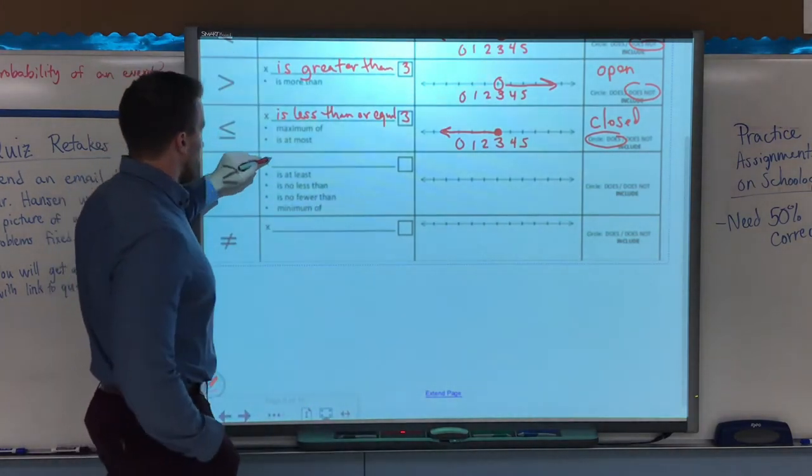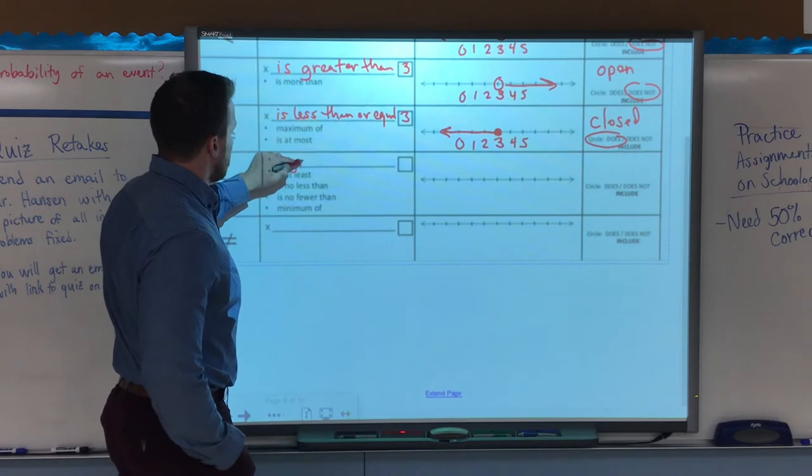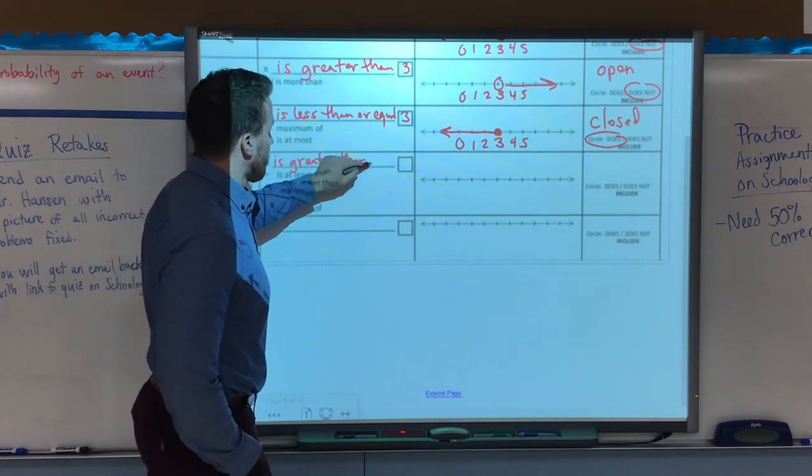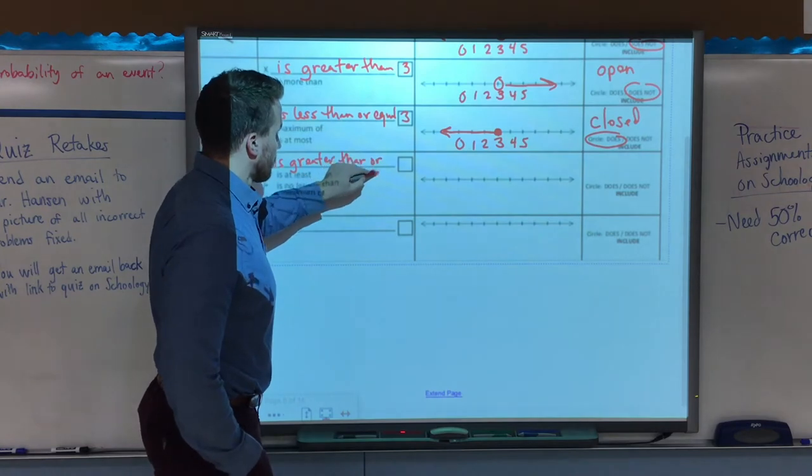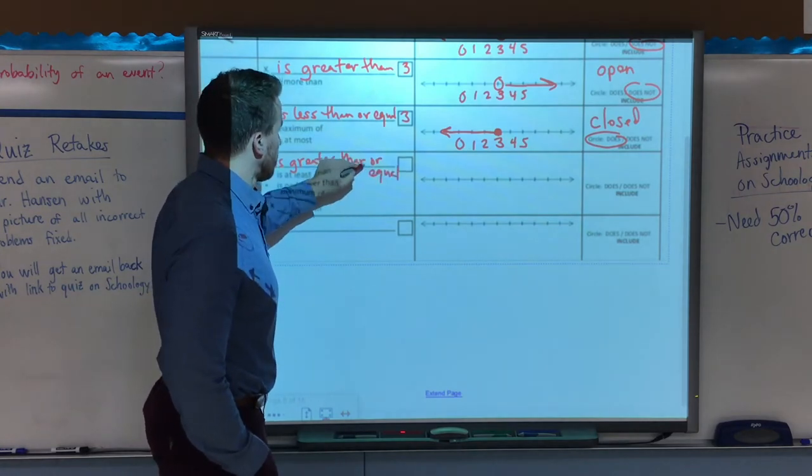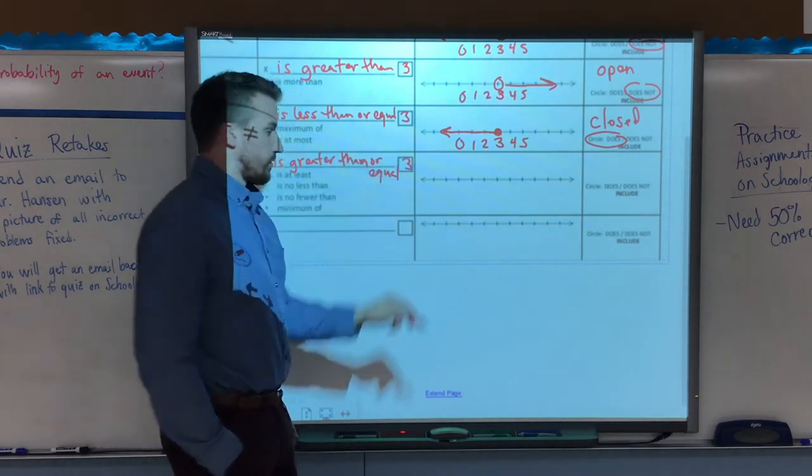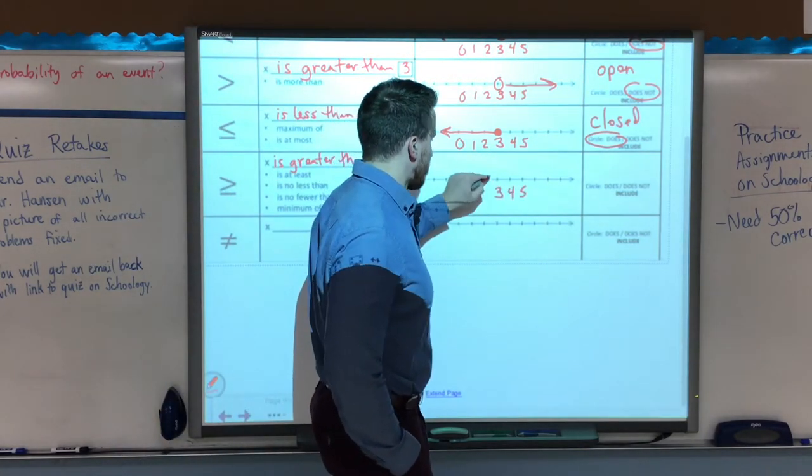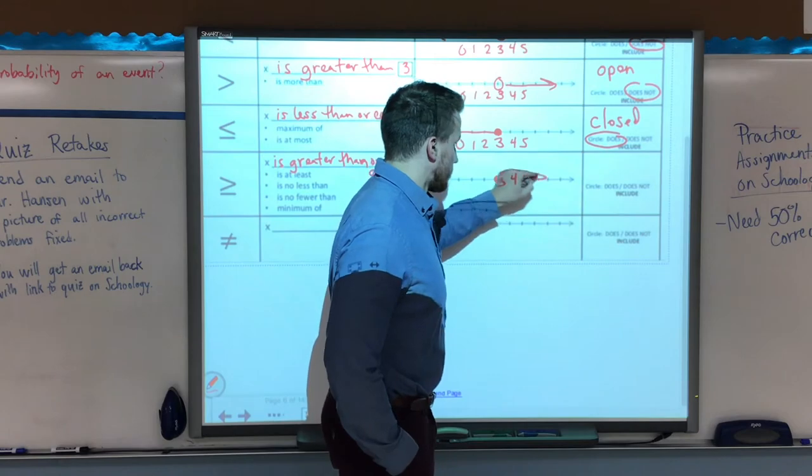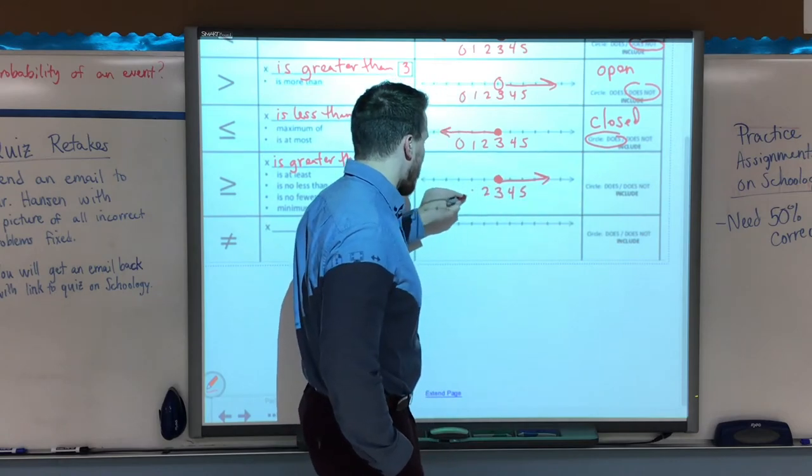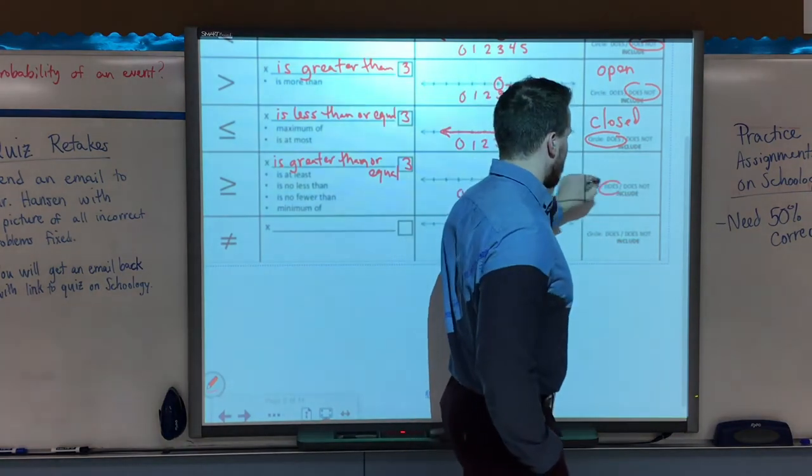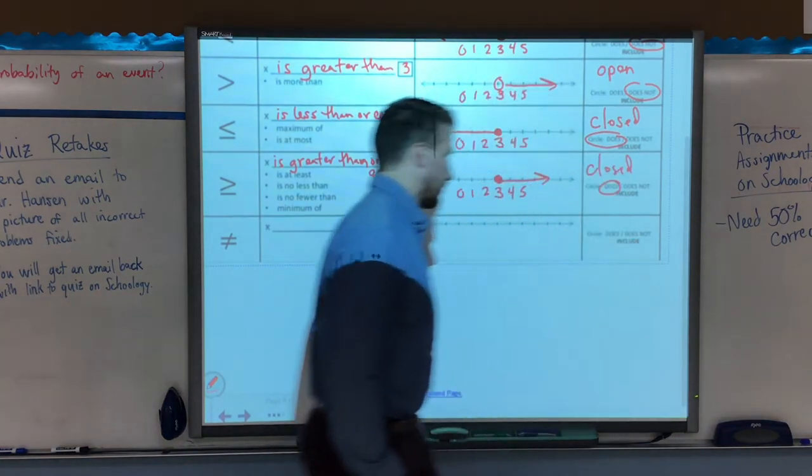Same thing here. x is greater than or equal to, and I'll say again 3. So again, it's going to be a closed circle at 3. And now this time, since it's greater than it's going to go to the right of 3. And that means, again, it does include it and it is in fact closed.